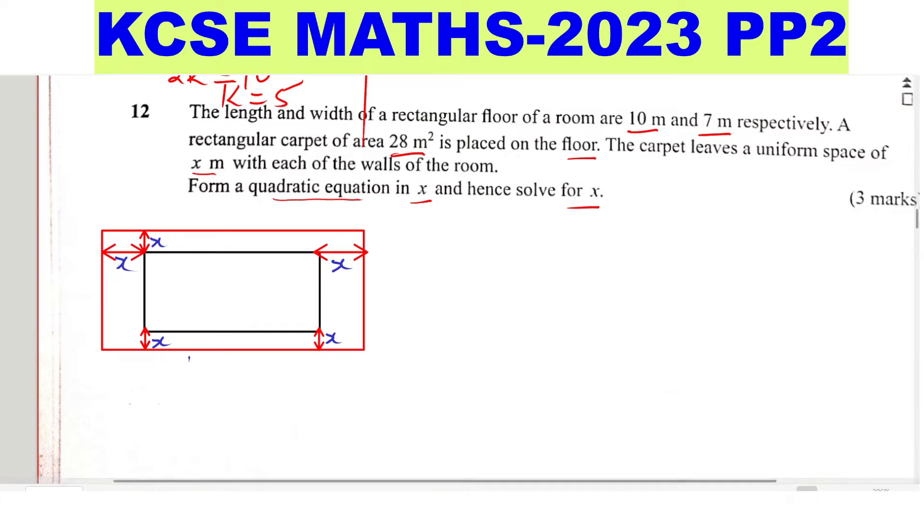The floor is 10 meters by 7 meters. So that means the length of the carpet will take 10 meters, then subtract two x's from both ends. So there are two x's. So this will be 10 minus 2x. This is x from this side and x from the other side. Then for the width, we have 7, again 7, subtract 2x, x from both ends.